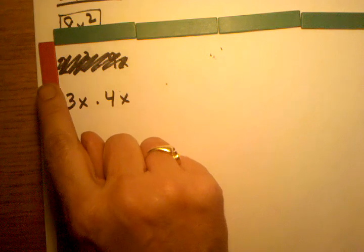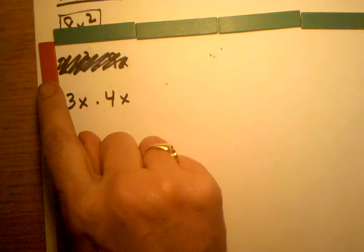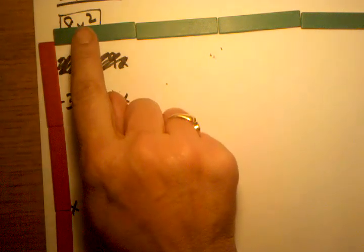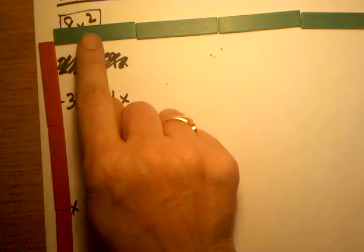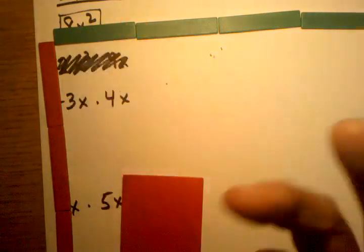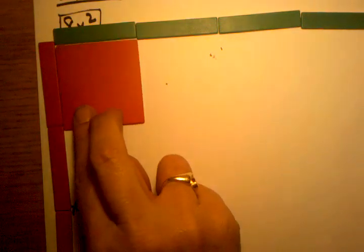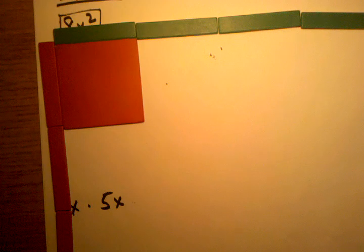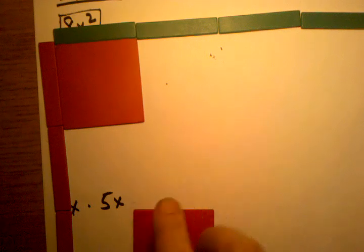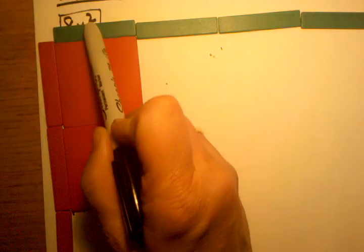And the way I think about that is I have to think about this part of the border times that part of the border, which is negative 1x times positive 1x. Well, a negative times a positive equals a negative. So I'm going to put a negative 1 there. And the same thing goes here. Now I'm thinking about this square. I'm putting it as red because this is, again, negative 1x times positive 1x, which is going to get me a negative times a positive, which is a negative.